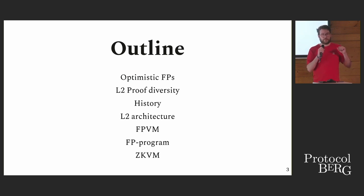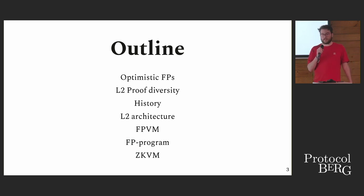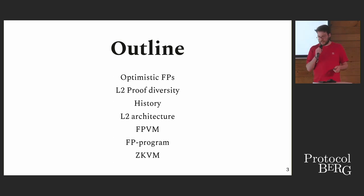I'll talk about proof diversity — this is the layer two equivalent of the client diversity problem on layer one. Then we have some history, architecture, and the components in these systems and how they change.